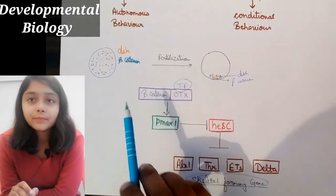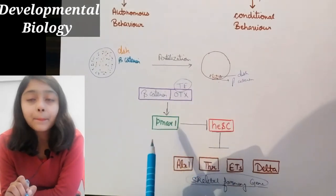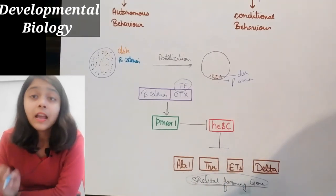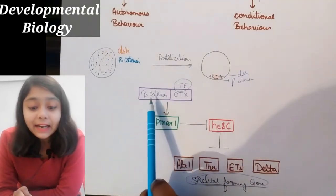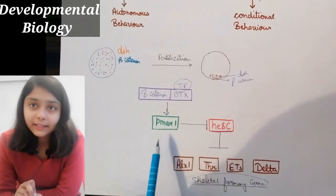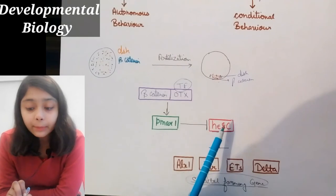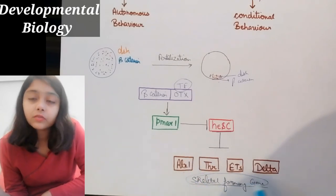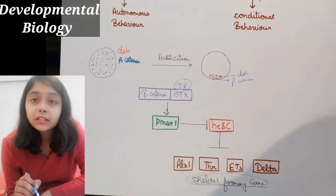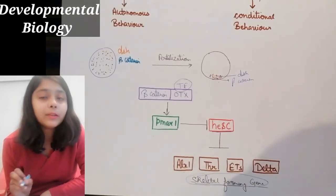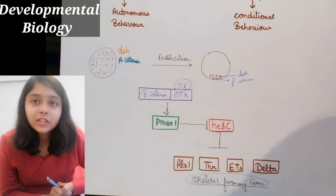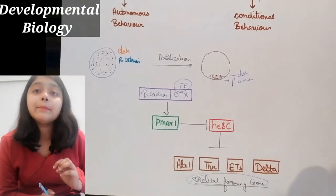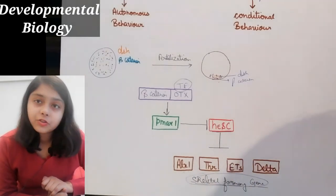So in micromere, beta-catenin was activated, which activated OTX and PMAR1. PMAR1 then inhibited HESC, which is normally an inhibitor of skeletal forming genes — so those genes are now expressed. But in macromere and mesomere, beta-catenin was not present, so PMAR1 didn't come, HESC was not inhibited, and HESC remained active — inhibiting the skeletal forming genes. So these four skeletal forming genes are present in micromere but absent in macromere and mesomere. This is why micromere follows autonomous behavior and macromere and mesomere follow conditional behavior.